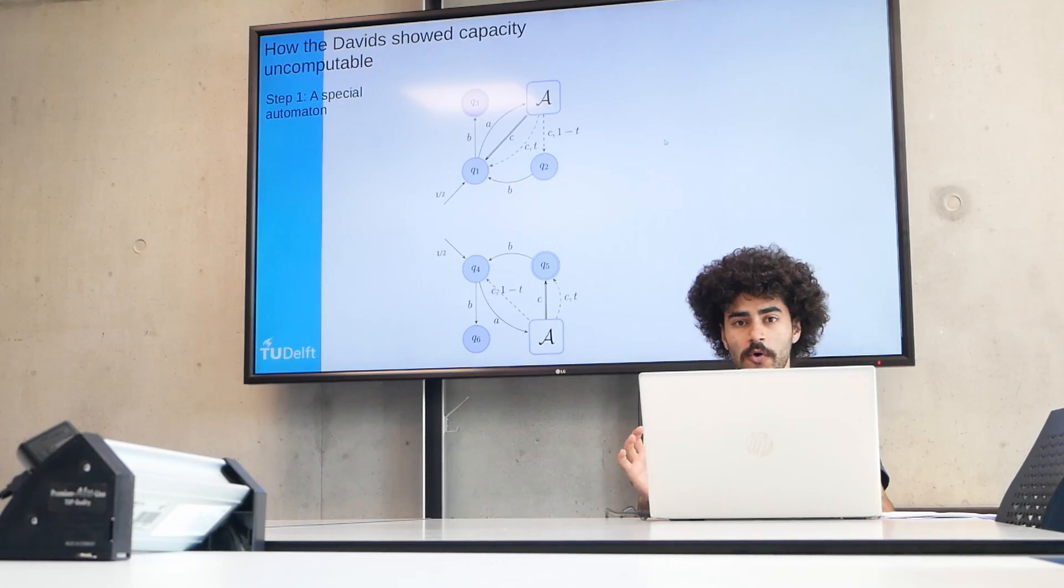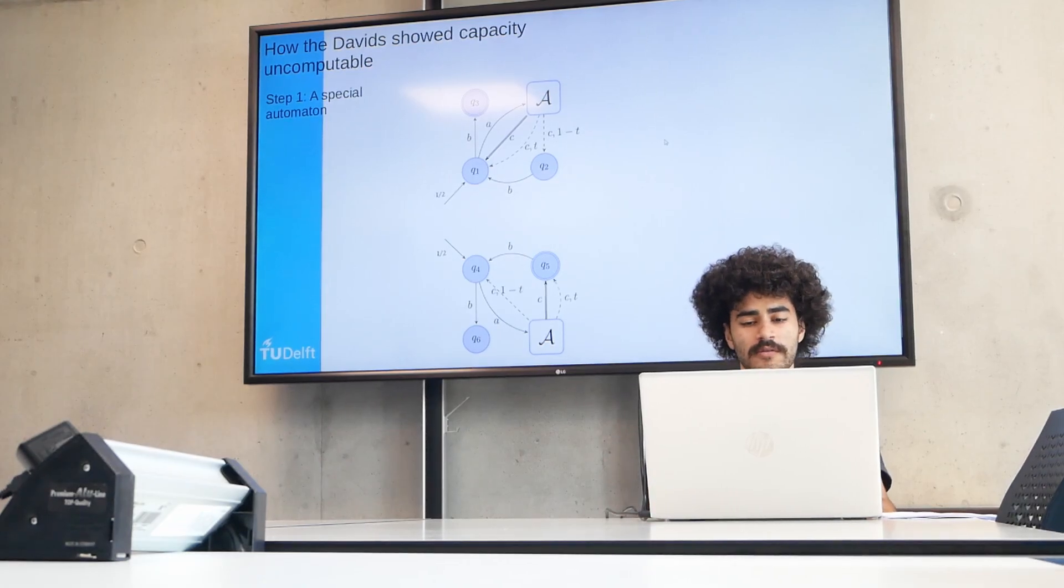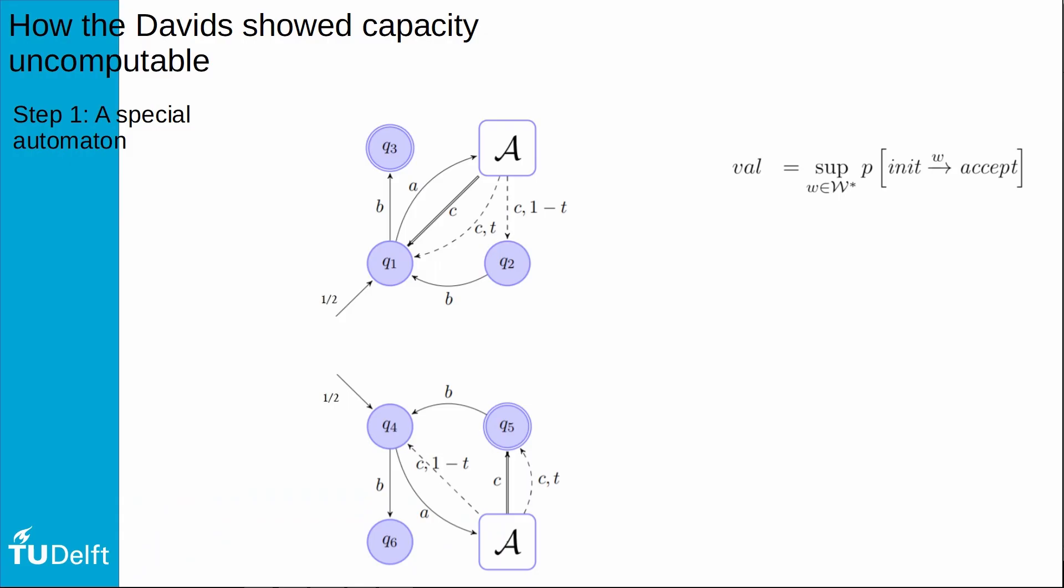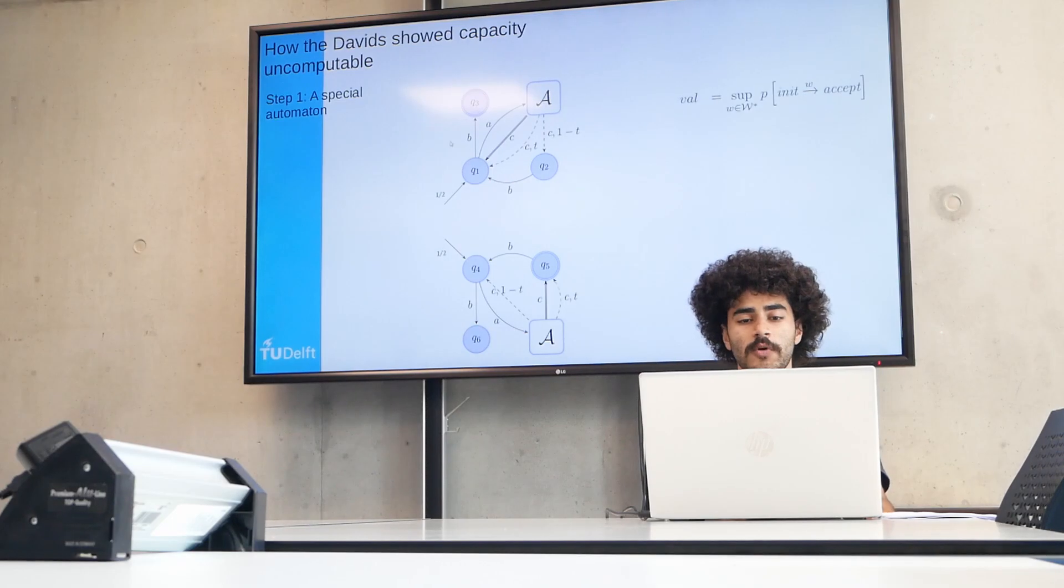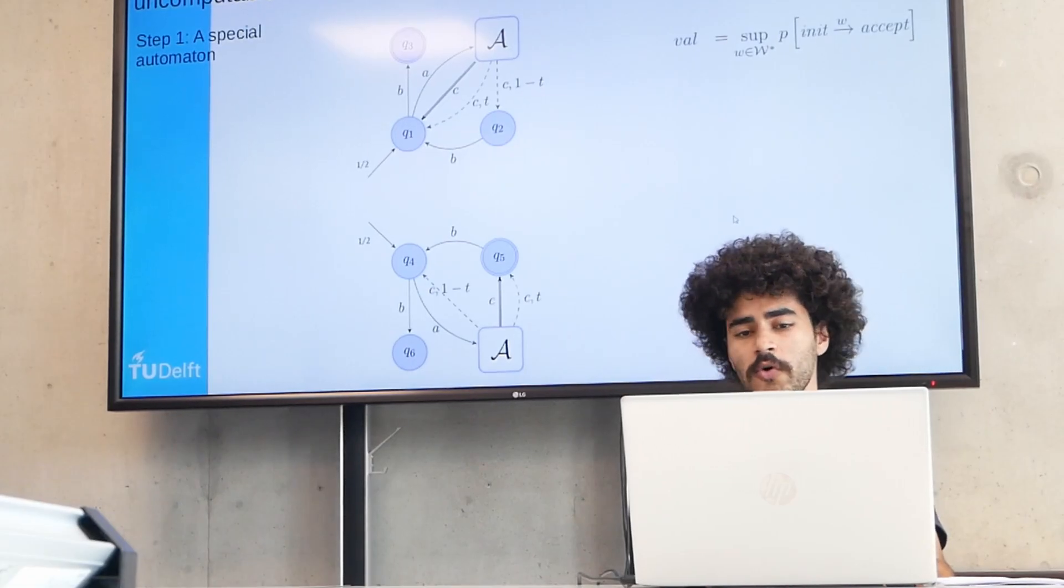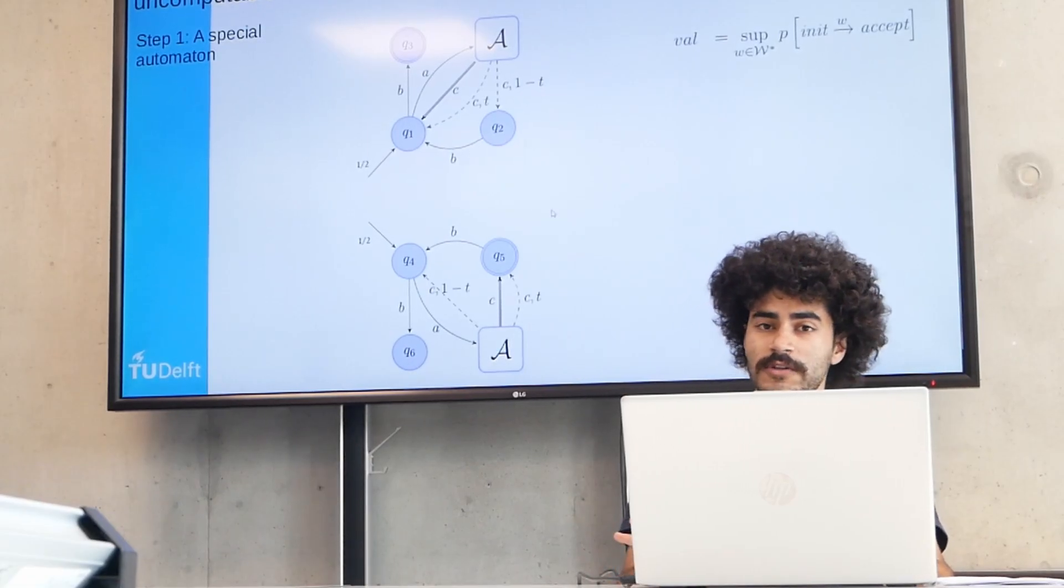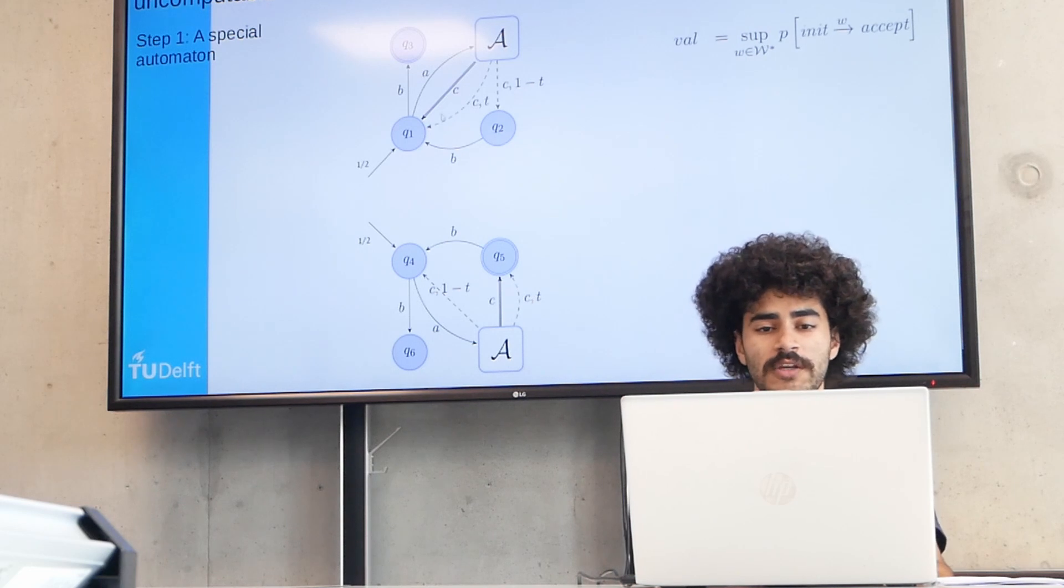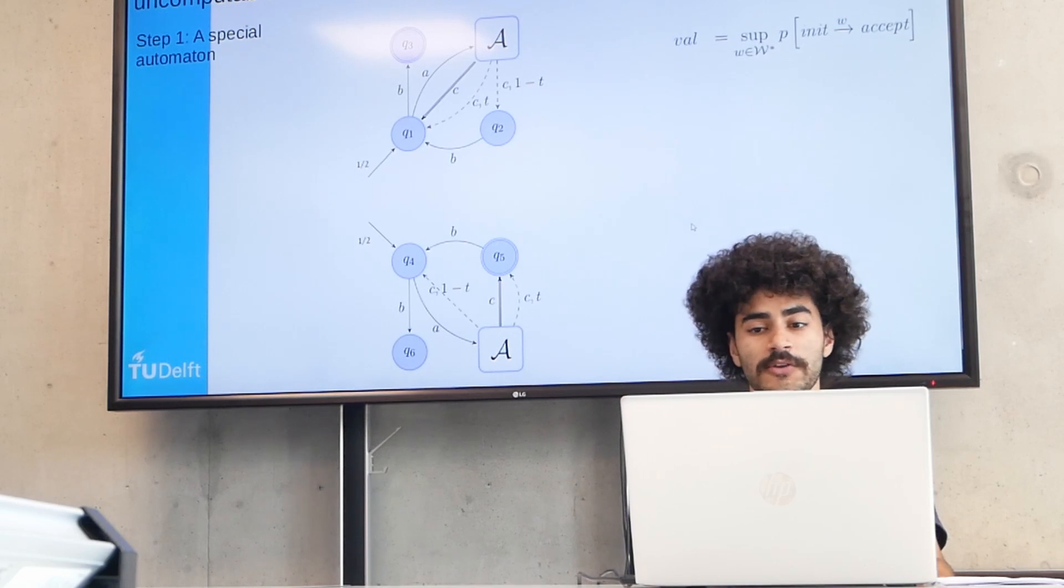Strings of these symbols are called words. And the value of the automaton is defined as the supremum of all words of the probability that the machine is going to begin in this initial state here and end up in one of these two accepting states. So you can think of it like this. Your goal is to input a string of symbols such that you steer the machine to be in one of these two accepting states. And then the value is the maximum probability that you're going to succeed.